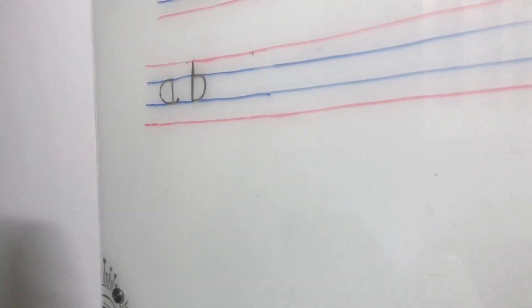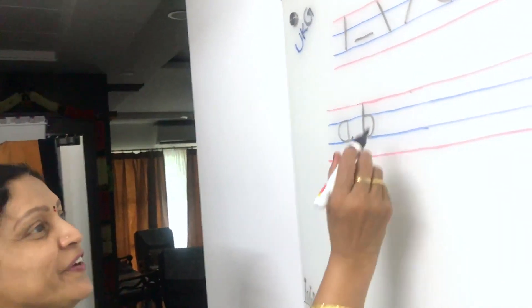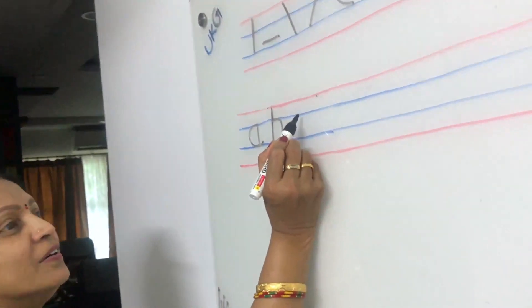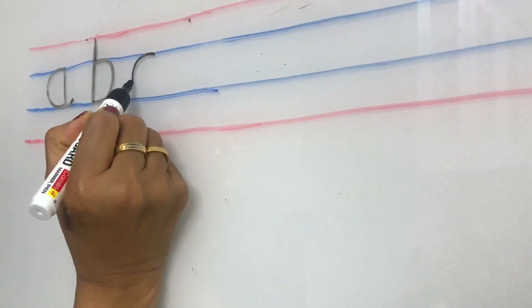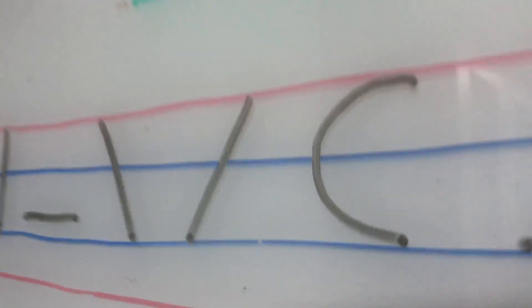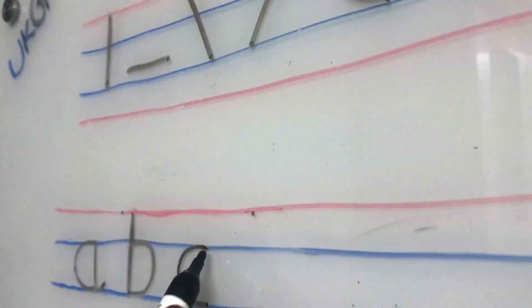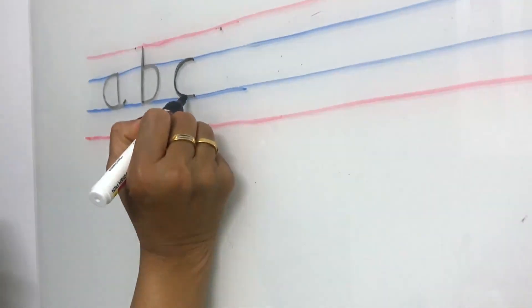Now we are writing small C. This is very simple children. This is only left curve on the blue line. Like this. This is small C.